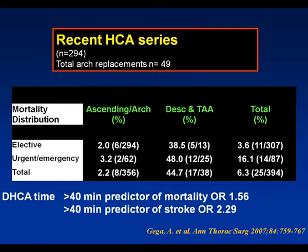There are still protagonists of HCA alone. This is some data from the Yale group in which they had quite credible results for ascending and arch surgery, but only a few patients in this series underwent total arch replacement, and prolonged HCA times were still predictors of stroke. Going back 15 years, the duration of circulatory arrest increases the risk of transient neurological deficit profoundly, and an increase in hypothermic circulatory arrest beyond 25 minutes reduces the chance that the patient will leave hospital in an anticipated time period.